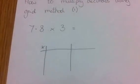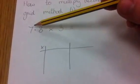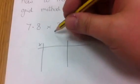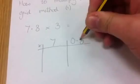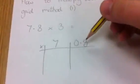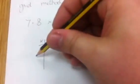Following the same pattern as before, I'm going to partition this number into units and into the decimals, into the tenths. So I've got 7 and I've got 0.8, and they make up the 7.8. I'm going to multiply those by 3.